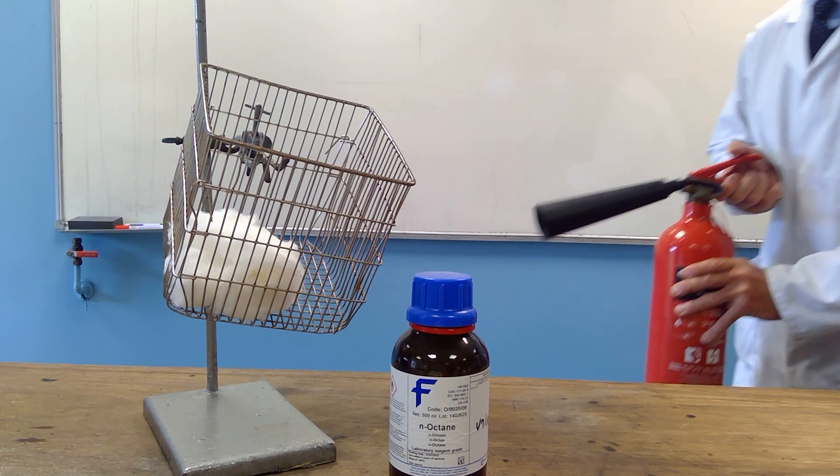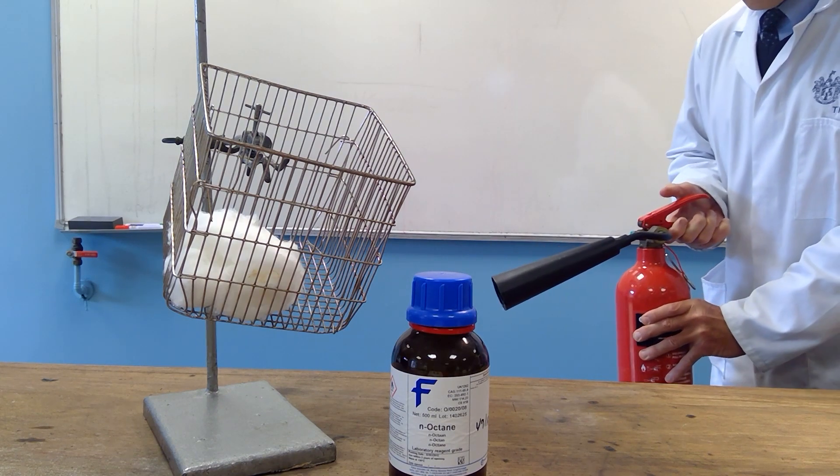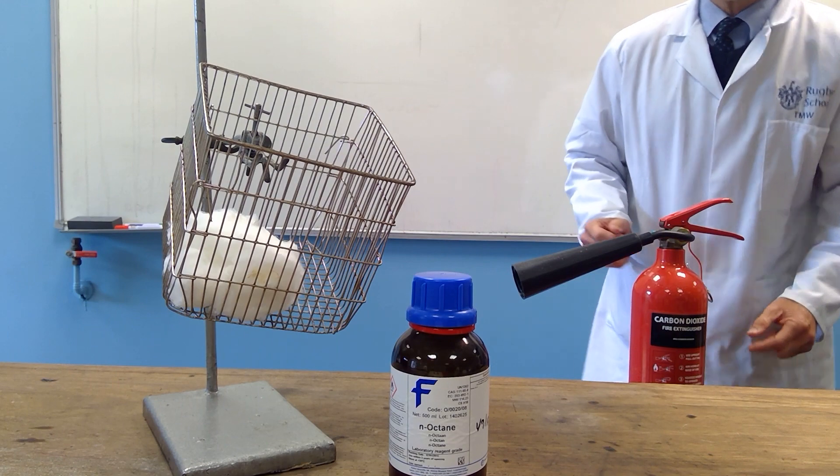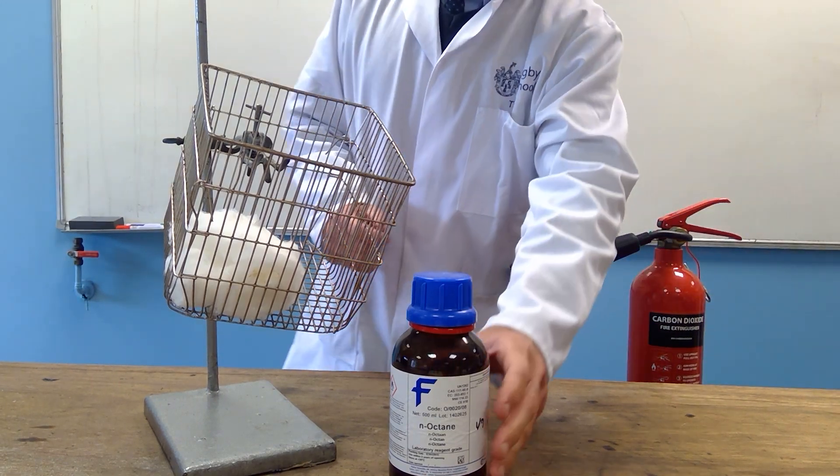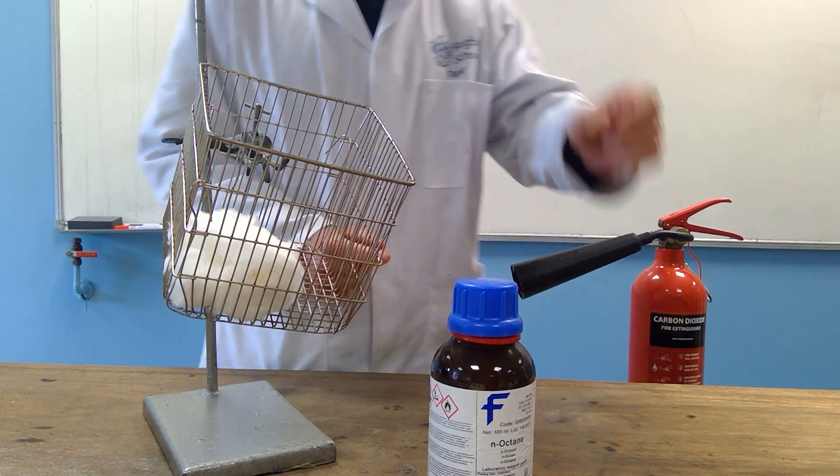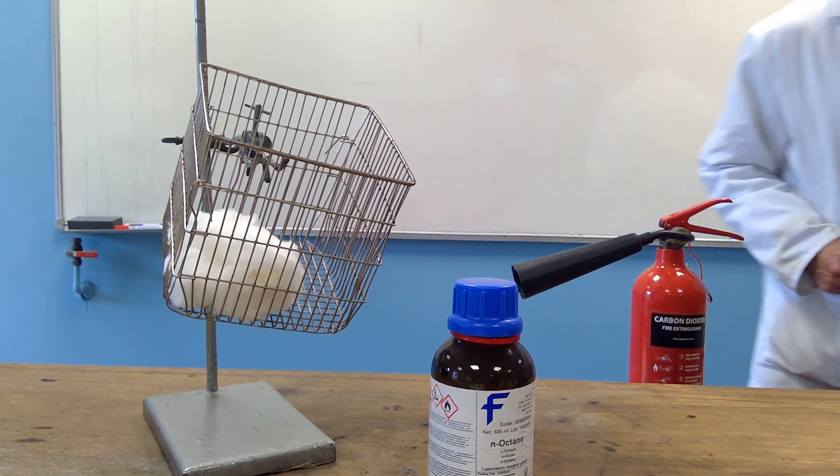So I'm going to use this carbon dioxide extinguisher to put out a small fire. The small fire can be created by burning some octane. Octane is a principal ingredient of petrol, and so we'll make a little petrol fire.